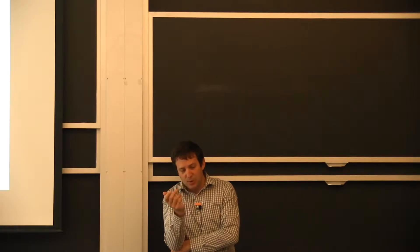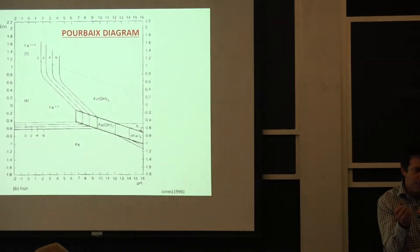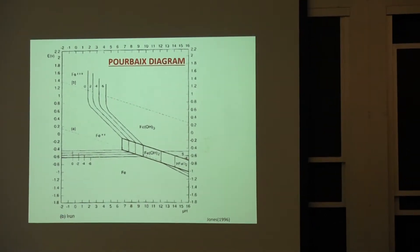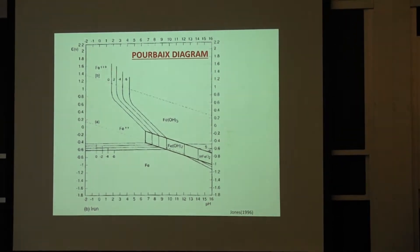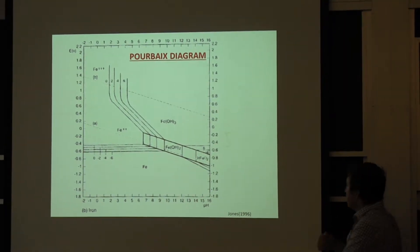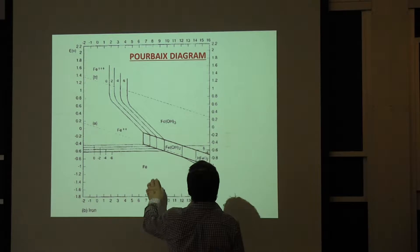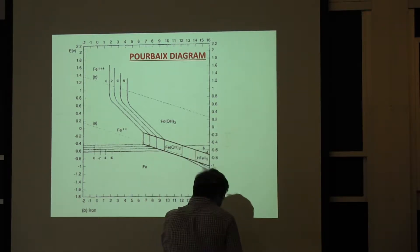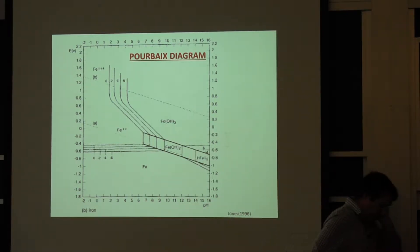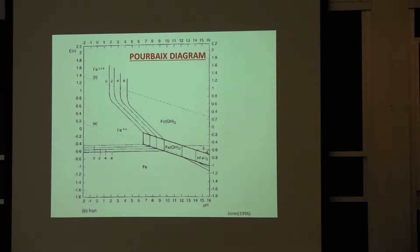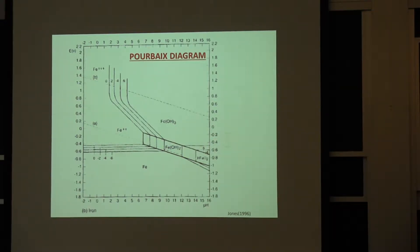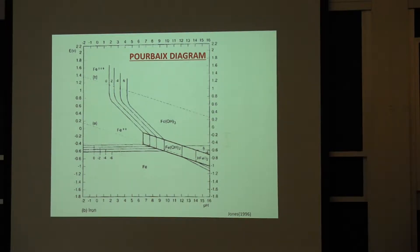In the notes, I left it in the first lecture — the Pourbaix diagram we looked at briefly at the end of last class. What you want with steel is to be in the region where you form a stable oxide or hydroxide on the surface, so you don't have to worry too much about losing thickness over time. We'll also talk about rate today.